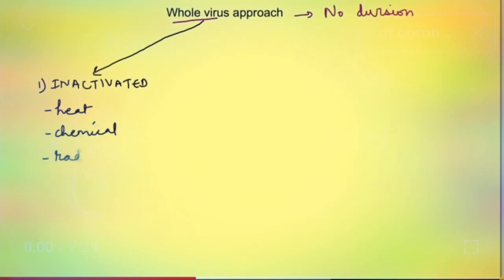In whole virus approach we use the whole virus but it should not have the ability to divide inside the body, otherwise it will cause the disease right? So we have to inactivate it. This is done by heat, chemical or radiation. In this approach basically the virus is killed and then it is produced in large quantity. Since this is a killed virus these do not cause an infection but an immune response is generated against the proteins.